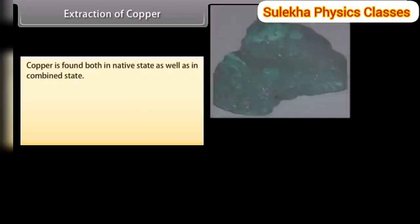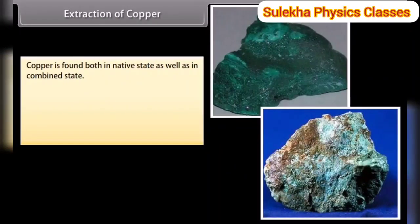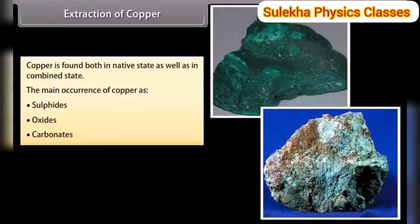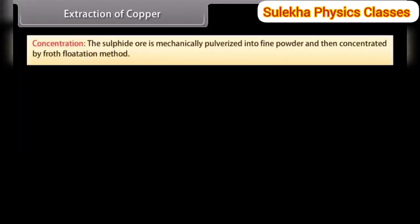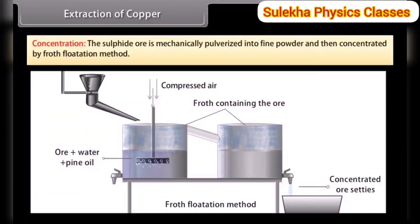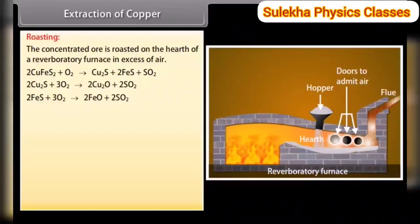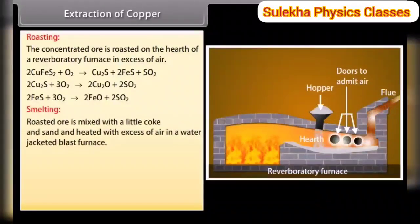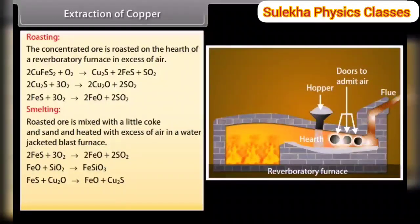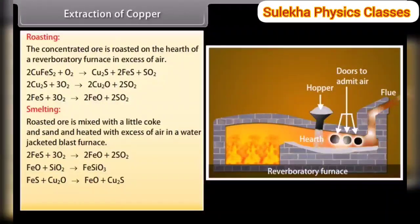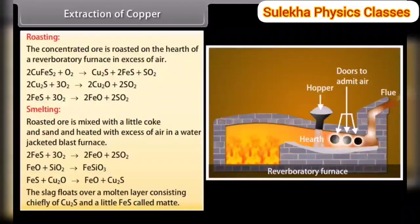Extraction of copper. Copper is found both in native state and combined state — mainly as sulfides, oxides and carbonates. Concentration: the sulfide ore is mechanically pulverized into fine powder and then concentrated by froth flotation method. Roasting: the concentrated ore is roasted on the hearth of a reverberatory furnace in excess of air. Smelting: roasted ore is mixed with a little coke and sand and heated in a water-jacketed blast furnace. Most remaining iron sulfide is converted into oxide, which reacts with silica forming fusible slag of iron silicate. The slag floats over a molten layer of chiefly Cu₂S and a little FeS, called matte.